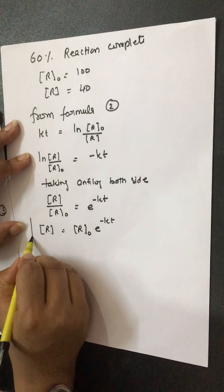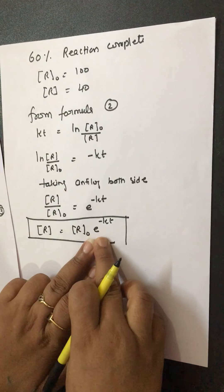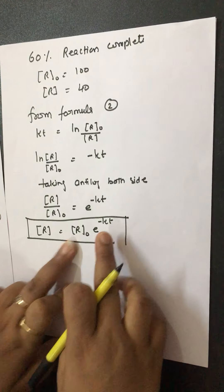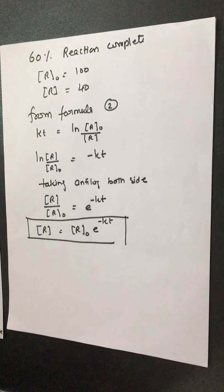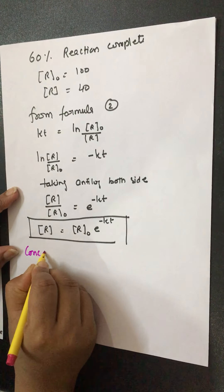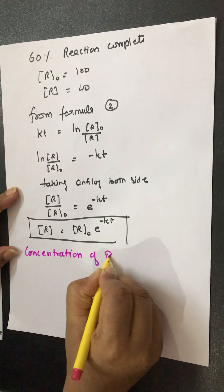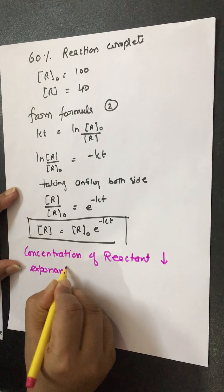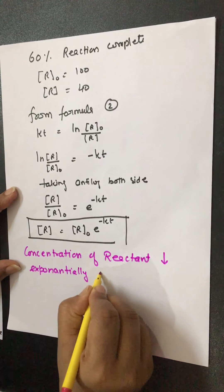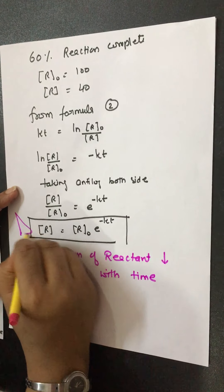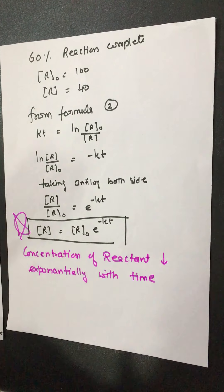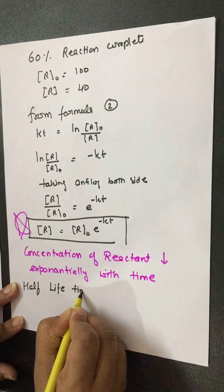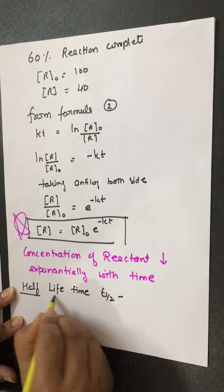From R equals R₀ · e^(−kt), we can conclude that concentration of reactant decreases exponentially with time. This is a very, very important point. Now we come to half-life time. Half-life is the time period in which half of the concentration of reactant is converted into product, or in short, the time in which initial concentration reduces to half.